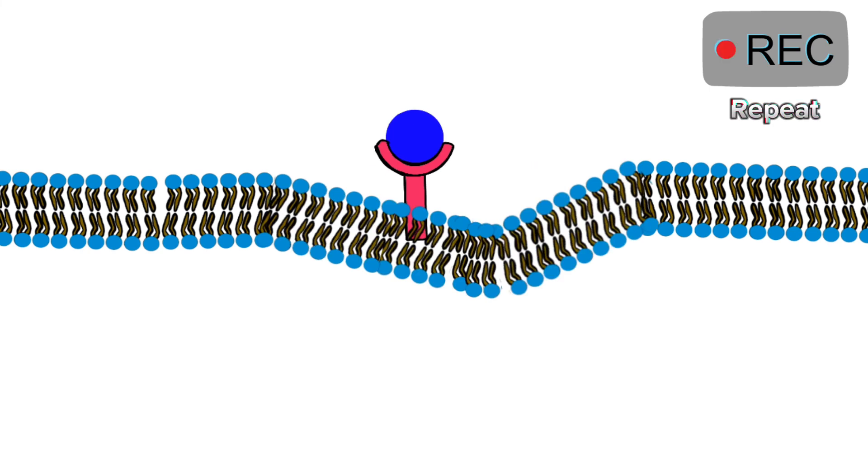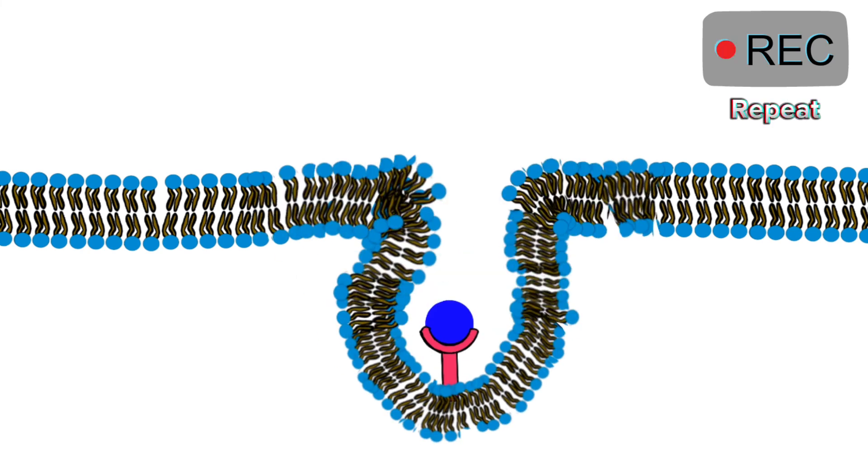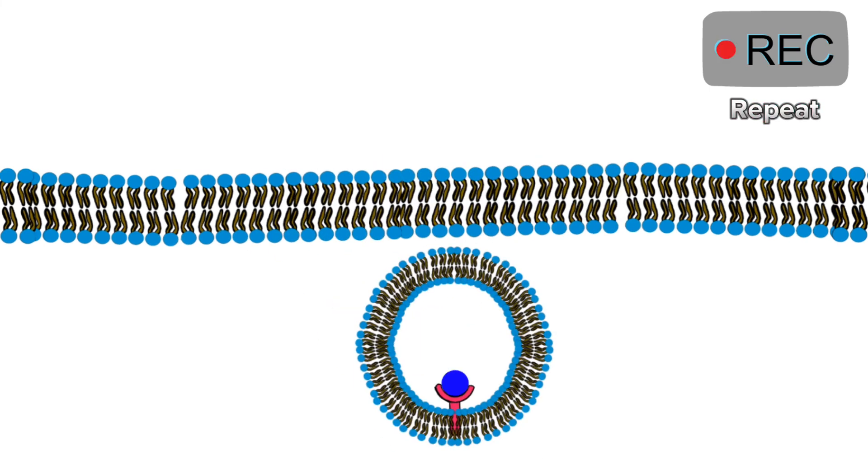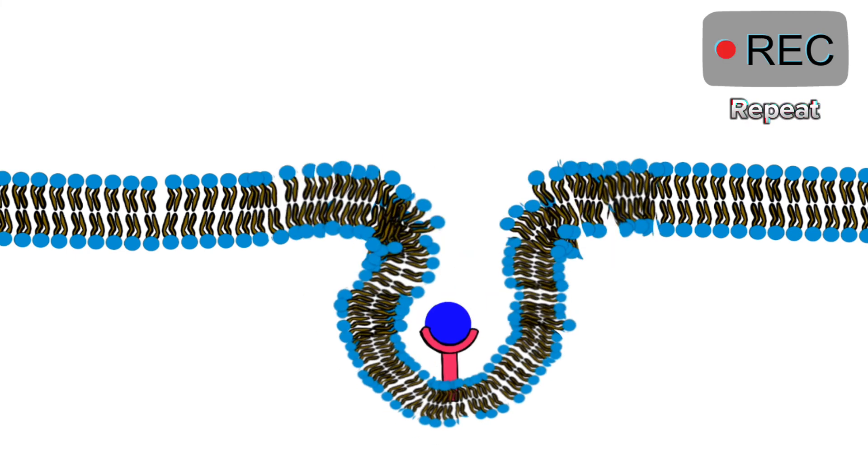This binding will trigger the formation of a pocket in the cell membrane and eventually pinching down and the formation of an intracellular vesicle that contains the molecule.